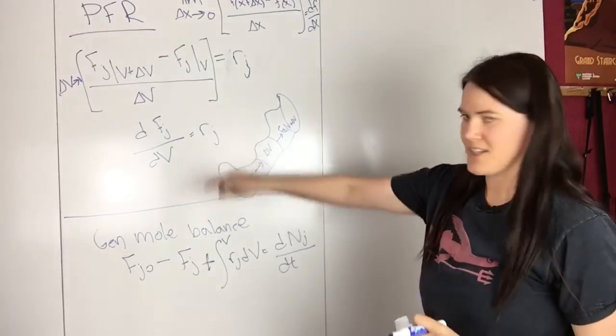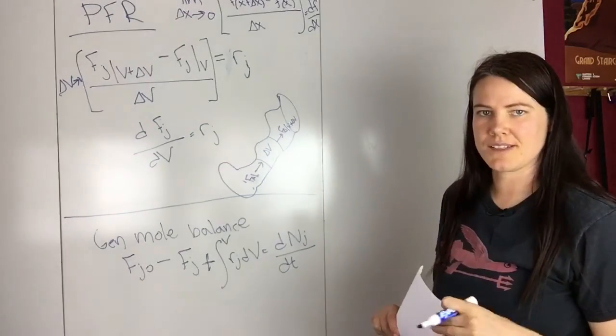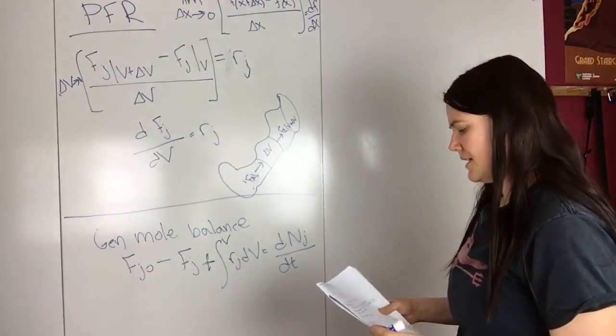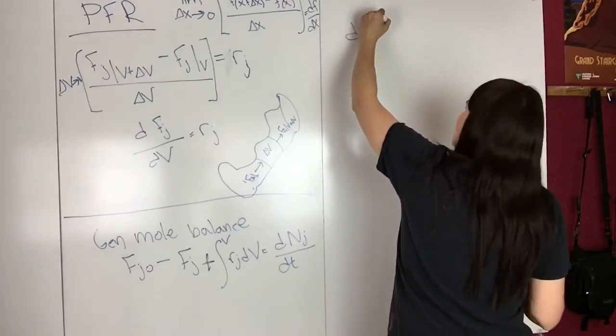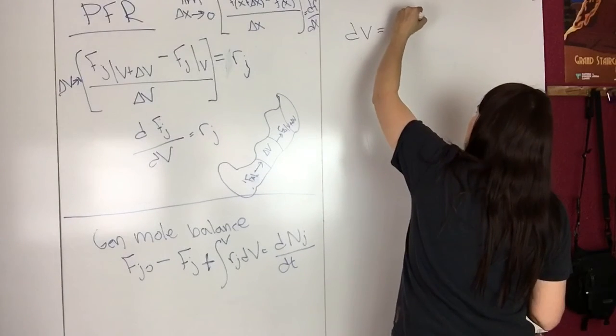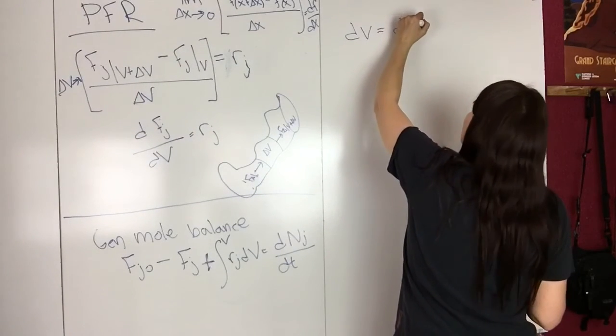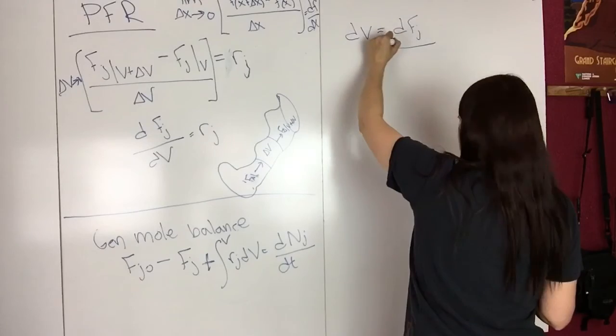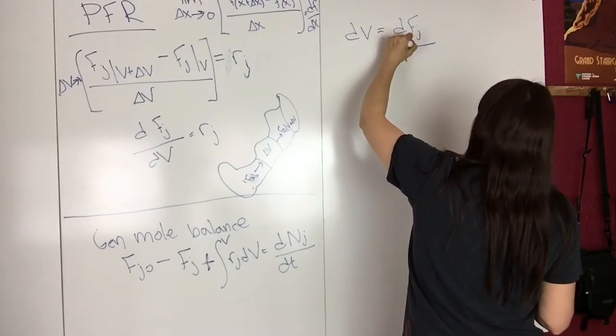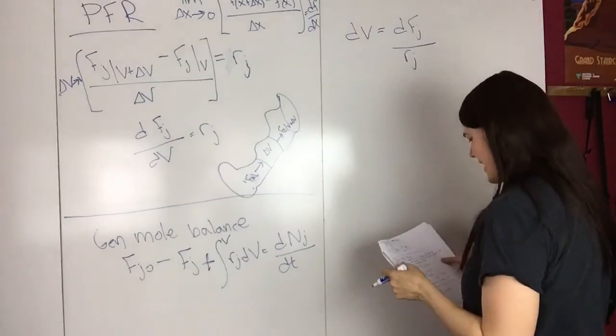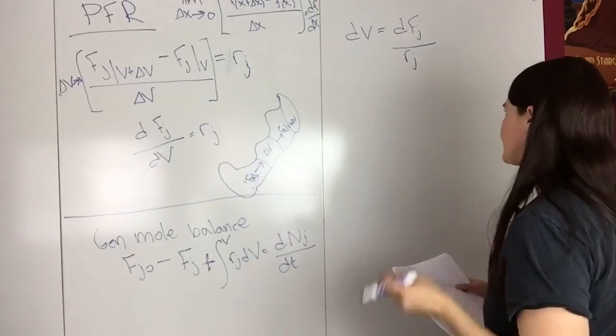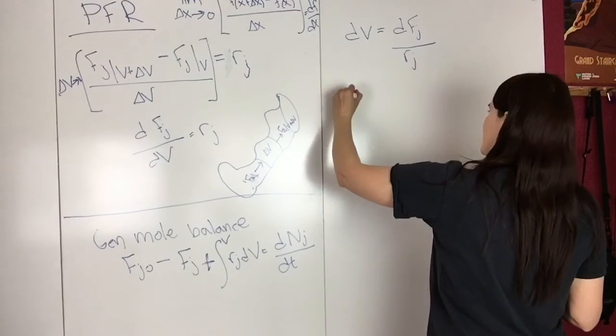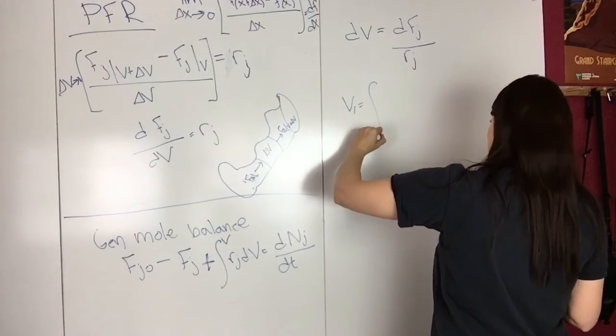We have this equation, but what we actually want to solve for is the reactor volume. We can rearrange to get dV equals dF_J over R_J. Integrating this, we get V equals...